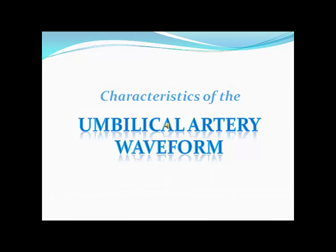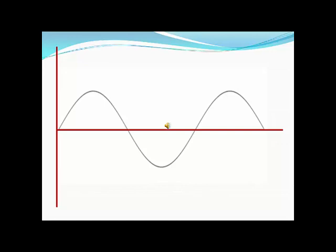The pulse wave Doppler tracing of the umbilical artery has some unique and specific characteristics. When looking at a pulse wave Doppler spectrum, the vertical axis or y-axis is always representing velocity in centimeters per second, sometimes millimeters per second, and the horizontal x-axis represents time, always in seconds.